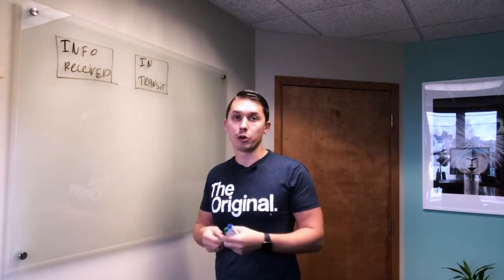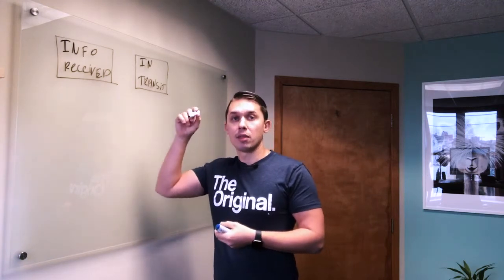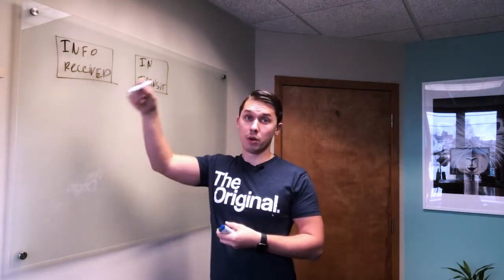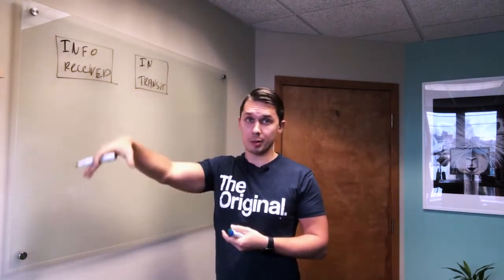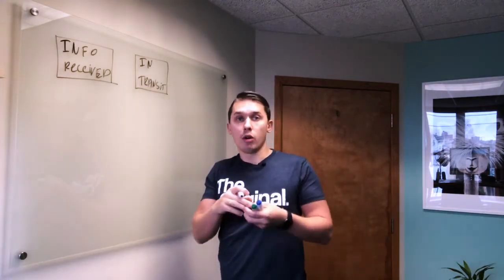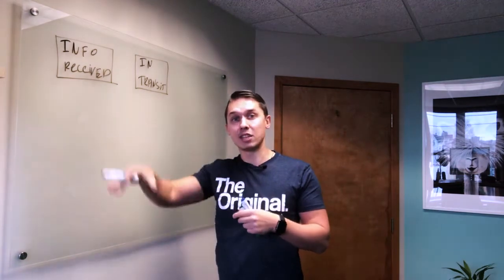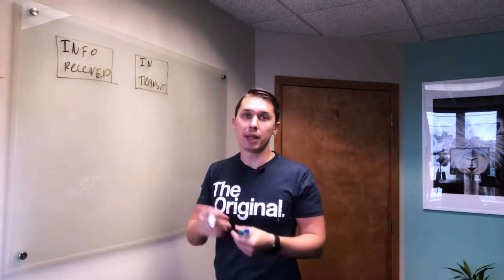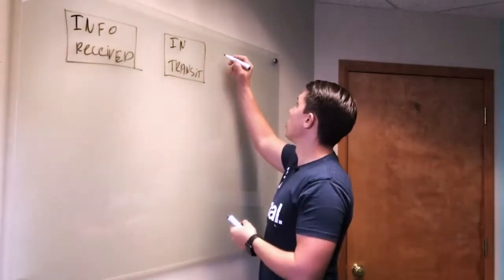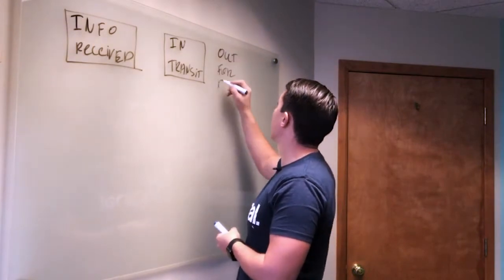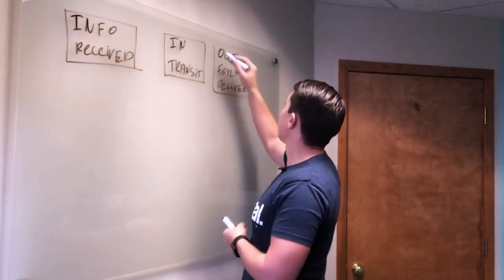The next status is out for delivery, meaning that the package was shipped from the location where your fulfillment center is to the city of the recipient. And in that city was placed on another truck or to the mailman who will deliver to your door. So status number three.